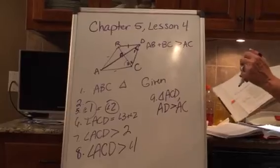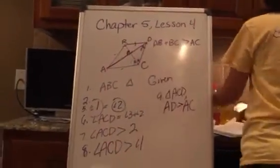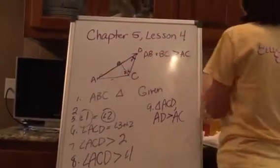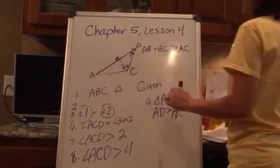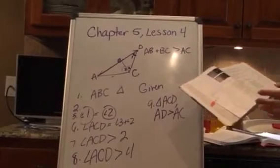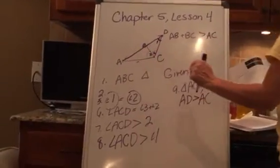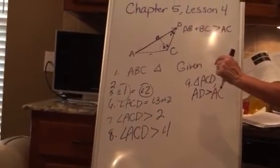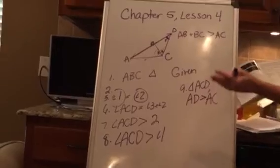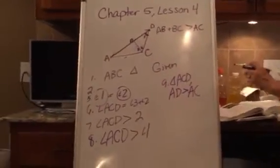Then look at 10. We have AB plus BD equals AD. That is the betweenness of points. And number 11 says AB plus BD is greater than AC. And that would be substitution from step nine. And 12 says AB plus BC is greater than AC, and that again is substitution. And thus, they have proven it. So walk through that proof.